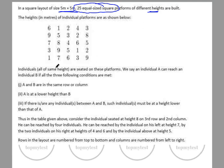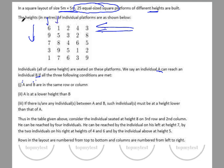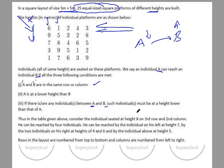All individuals are seated on these platforms. We can say individual A can reach individual B — for example, going from 6 to 1 or from 3 to 8 — under certain circumstances. A and B must be in the same row or the same column; movement can only be along a row or a column, not diagonally. A must be of a lower height than B. And if there are any individuals between A and B, such individuals must be at a height lower than that of A.